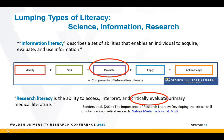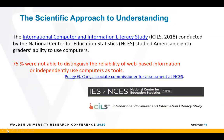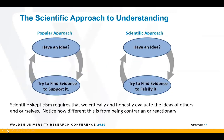Science literacy is very closely connected to both information literacy and research literacy — it's really this essence of critically evaluating information and where it comes from. One statistic: 75% of American eighth graders who are considered very computer literate are not able to distinguish the reliability of web-based information or independently use computers as tools. In the scientific approach, we have an idea and then we go out and try to find evidence to falsify it. If we fail to falsify our idea, maybe we have a good one. If we do falsify it, good — now we can discard or modify it and start again.